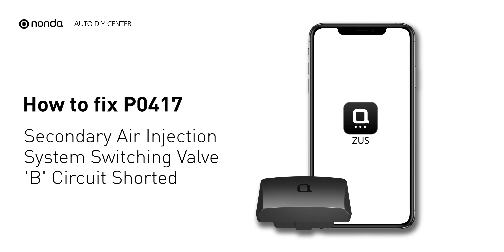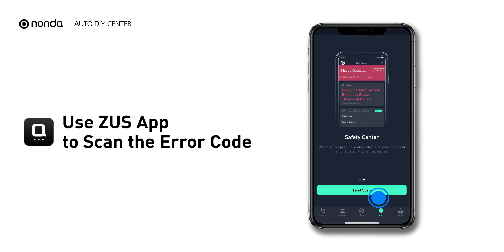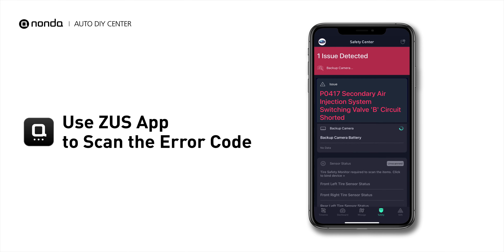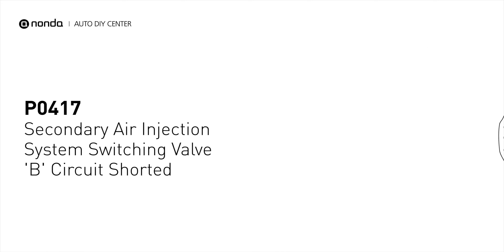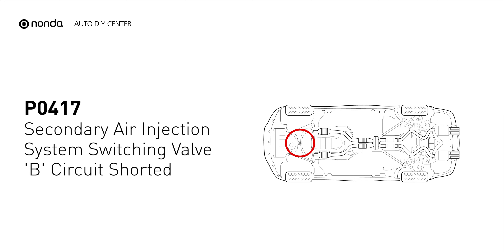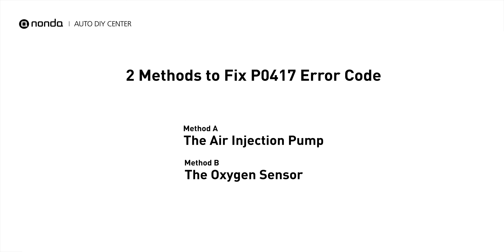If you are getting a P0417 error code, this video is going to show you two practical solutions to fix the error code at home. Use the Zeus app to scan your vehicle and see the error code P0417. It indicates that the engine control module got input from the air injection system driver that the air pump has a malfunction with an open circuit. Here are two simple DIY methods you can try to solve this problem.